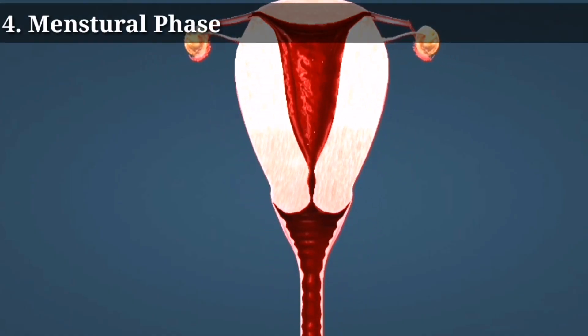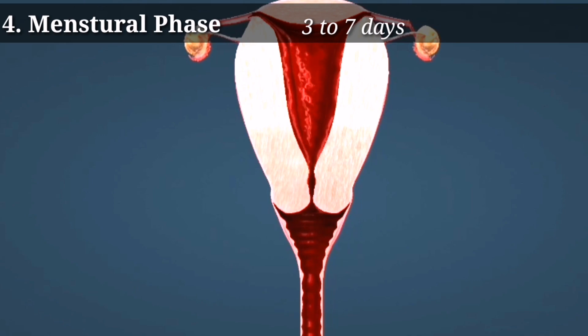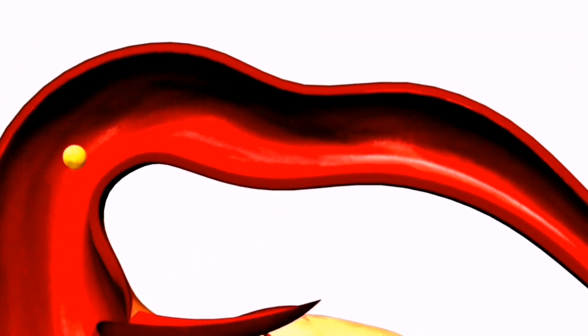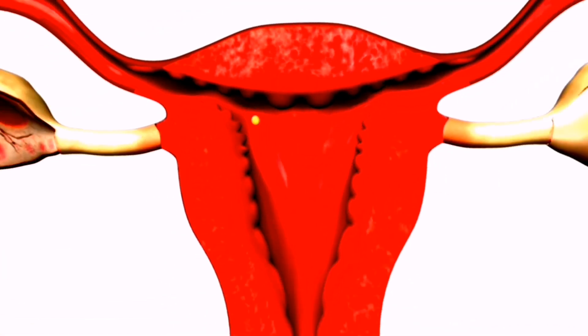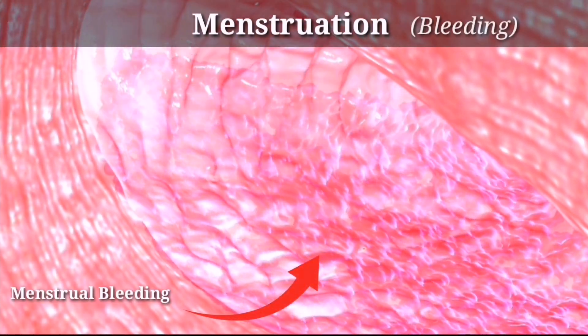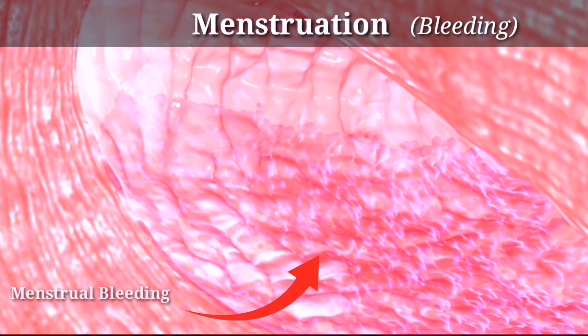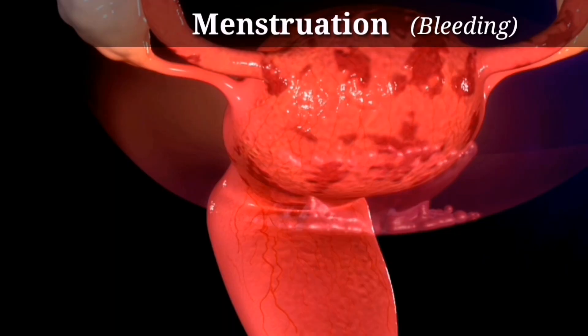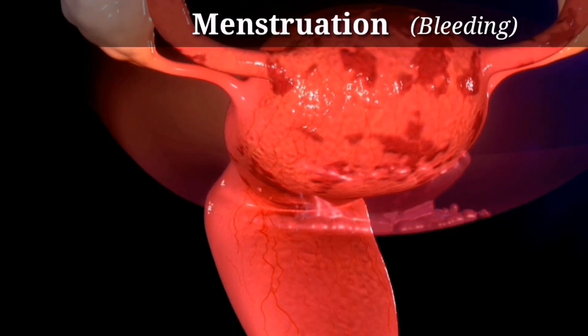The menstrual phase is the final stage and lasts for around 3 to 7 days. During this phase, if the egg is not fertilized, the uterus sheds its lining and this results in bleeding. This bleeding is what is commonly referred to as a period.